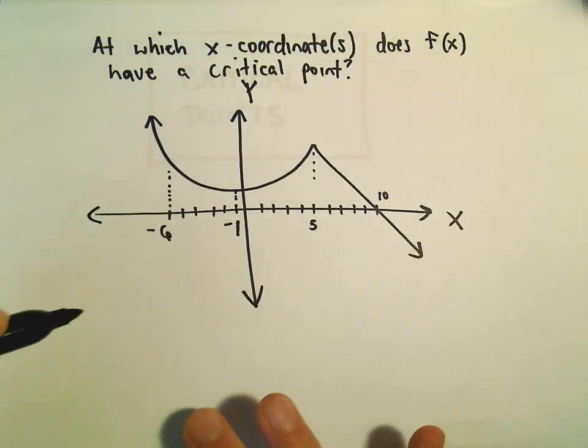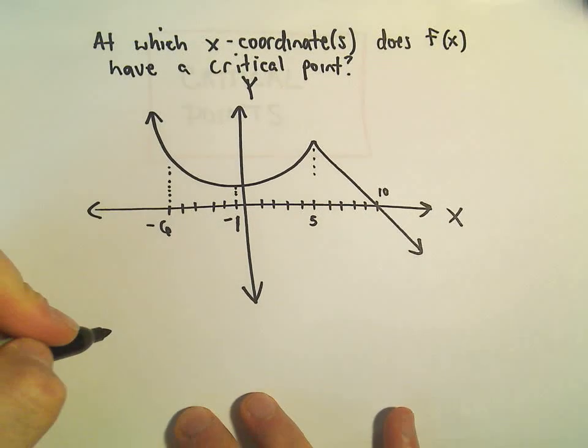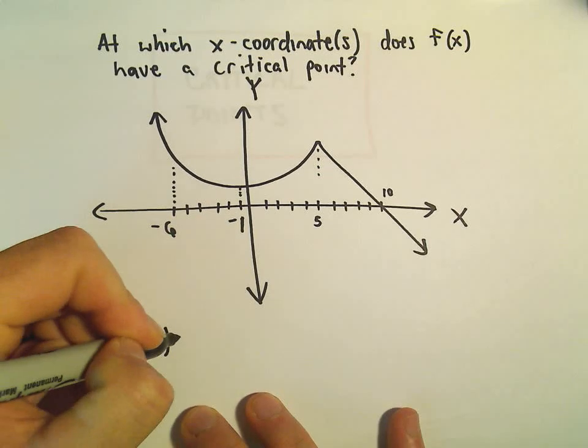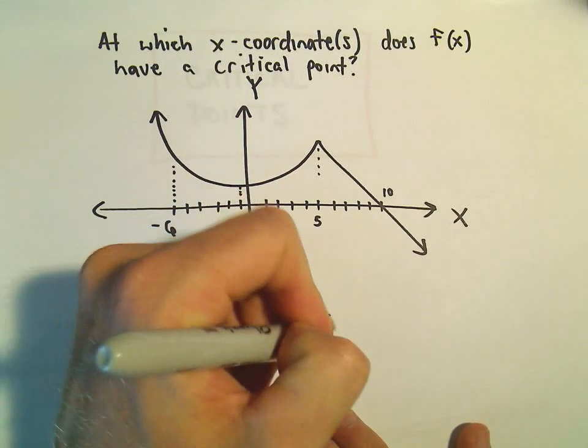And the main thing to remember, critical points happen - there's a couple different conditions that we look for. So we either think about where the derivative equals zero, or where the derivative is undefined.